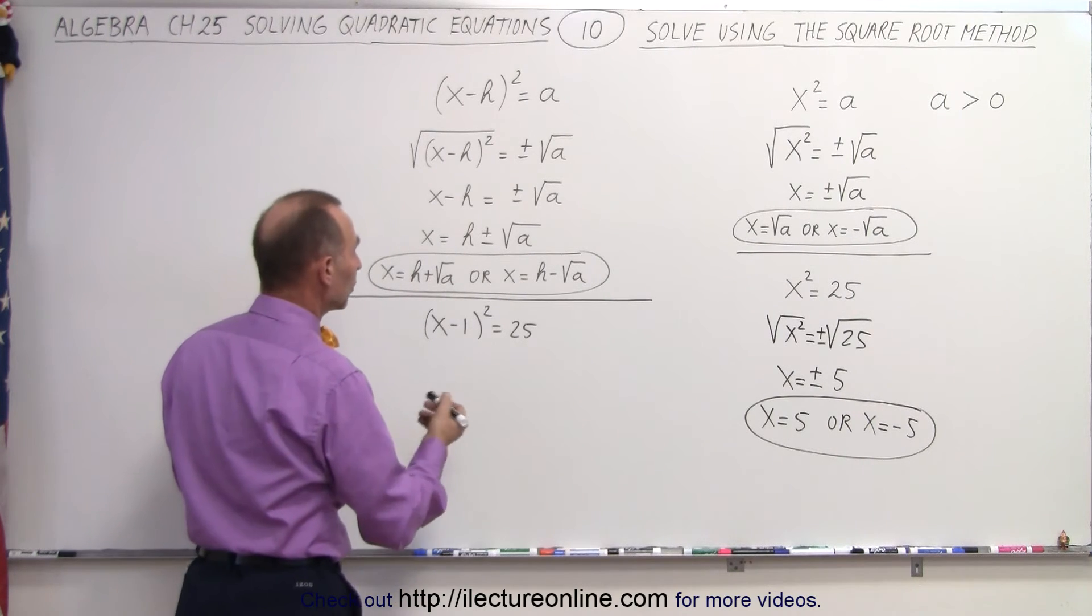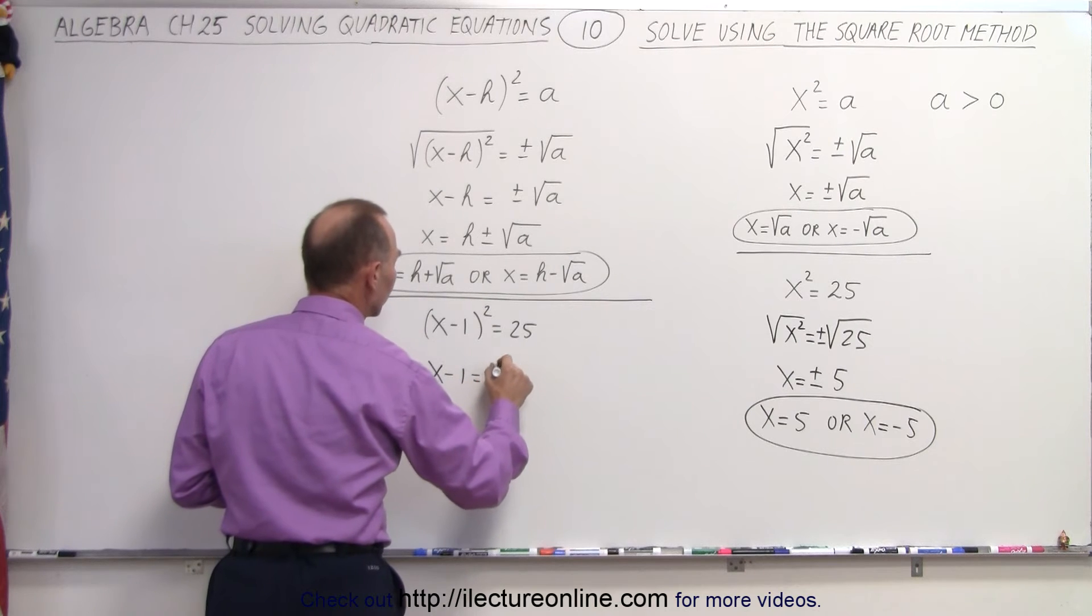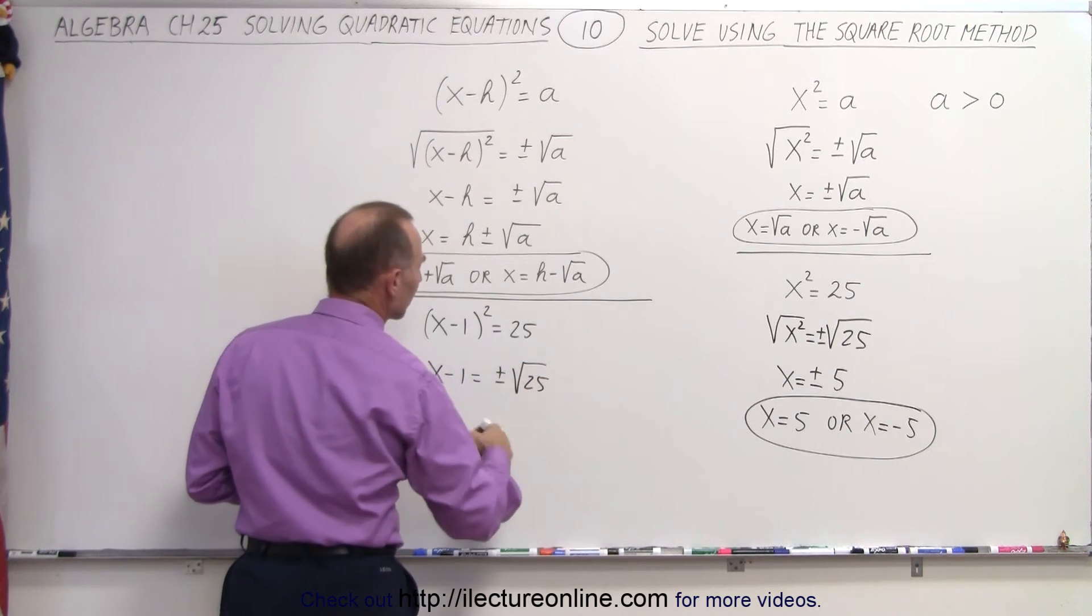we have this example right here. We're going to take the square root of both sides. That means x - 1 = ±√25.